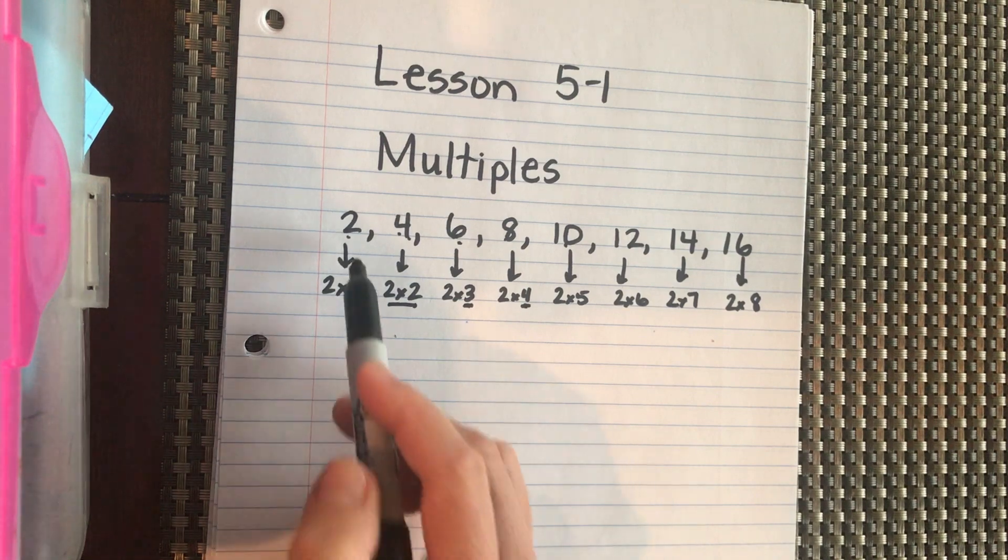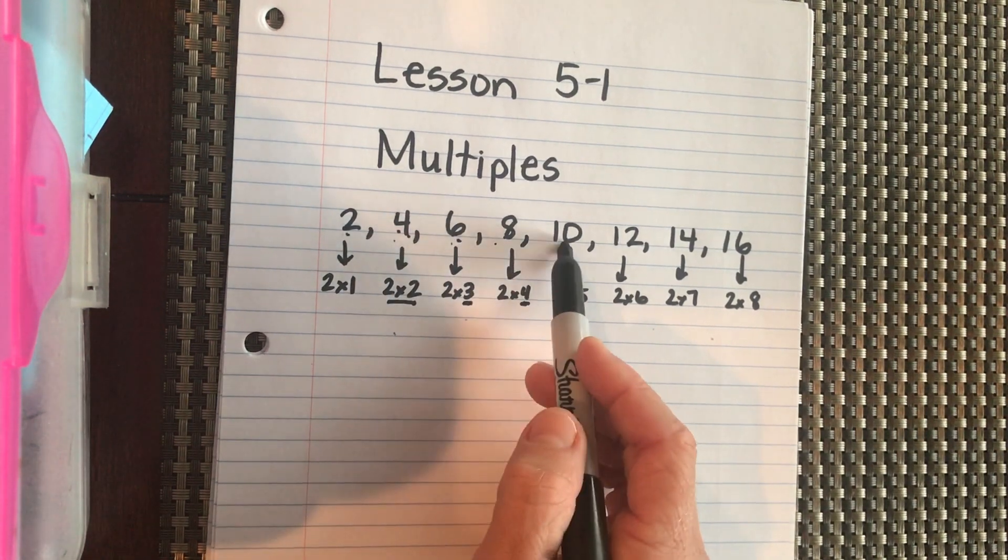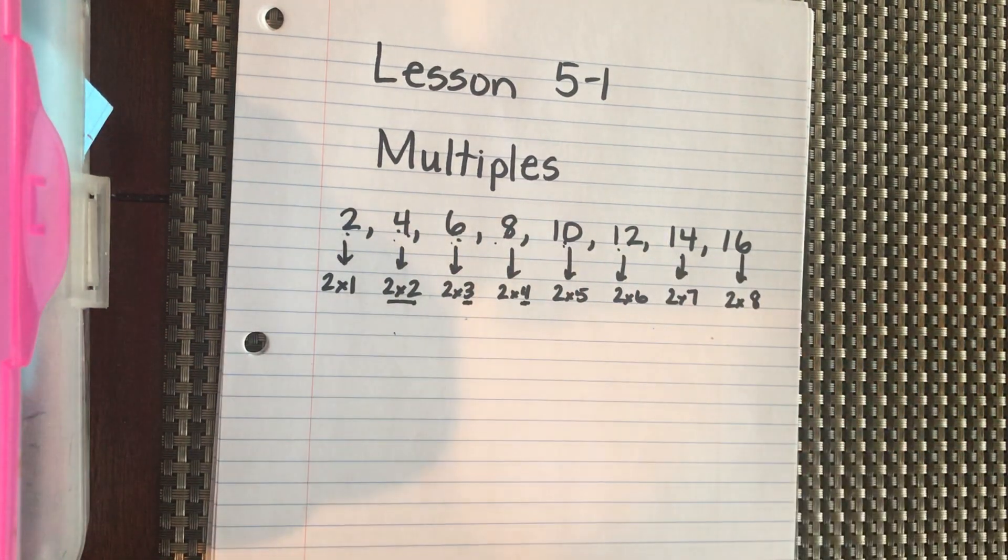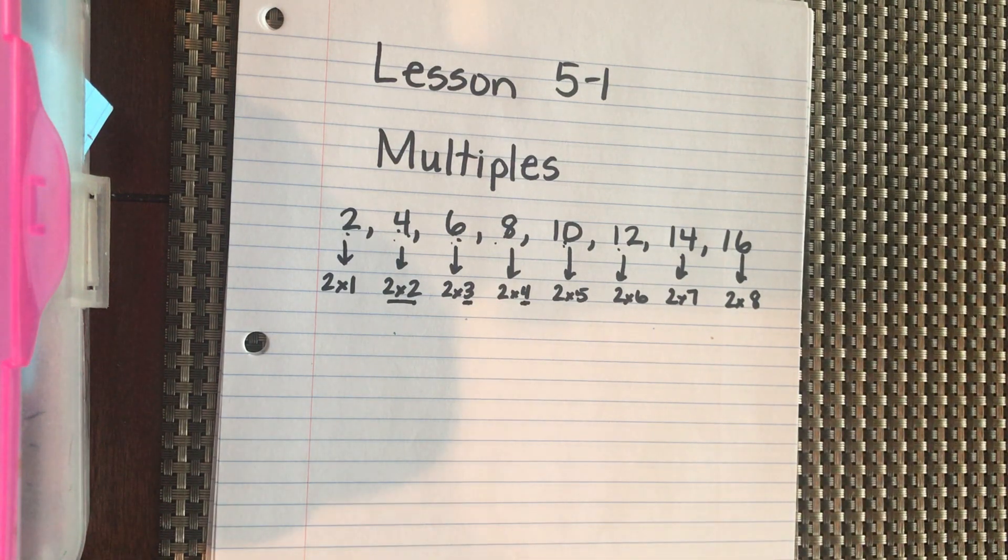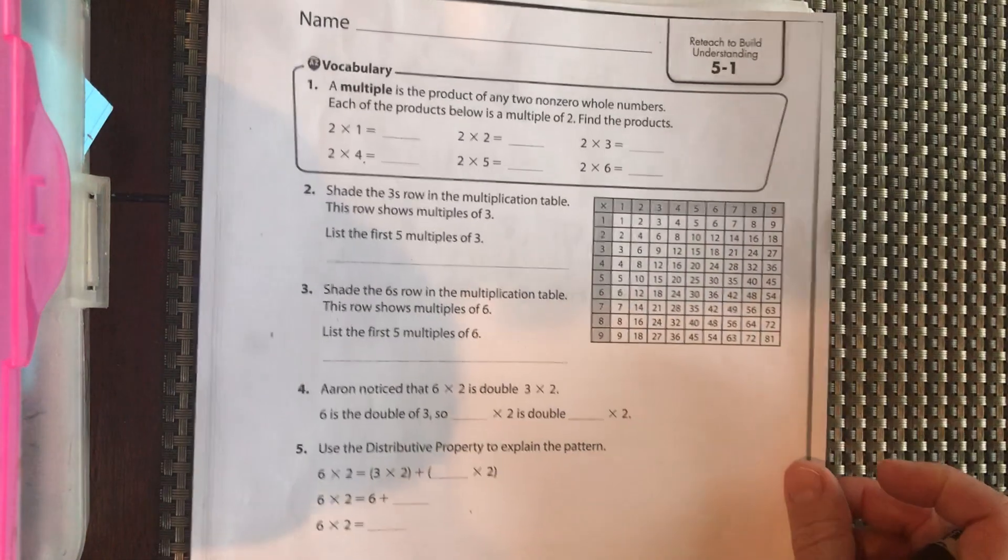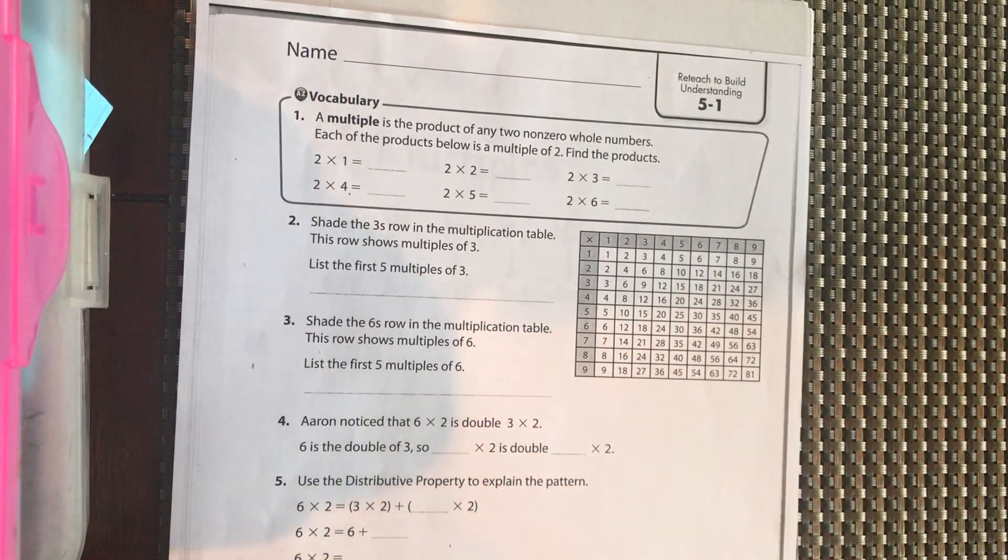So the multiples of 2 are 2, 4, 6, 8, 10, 12, 14, 16, 18, 20. On and on and on they go. So let's look at our worksheet here.